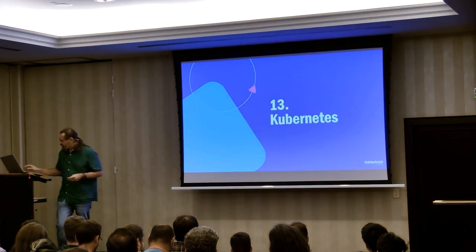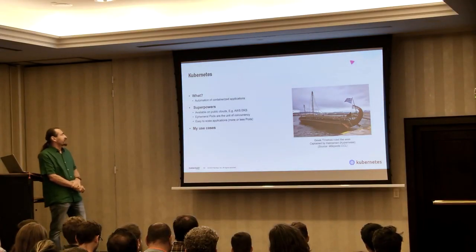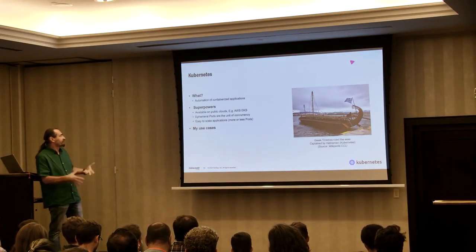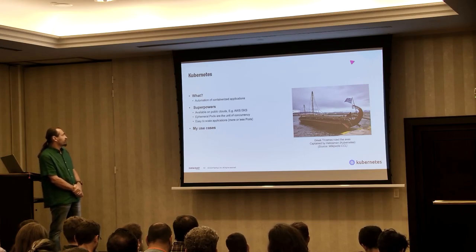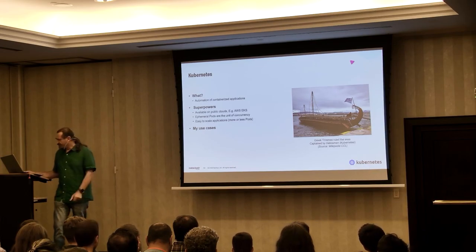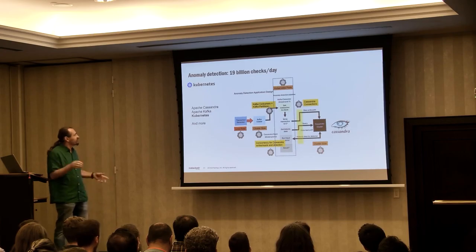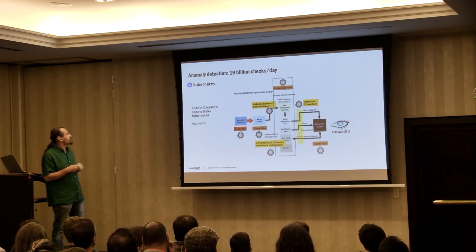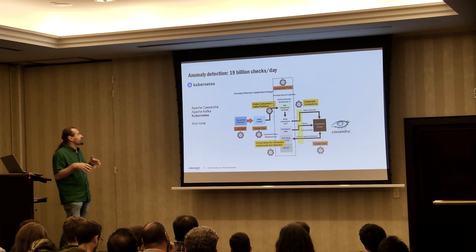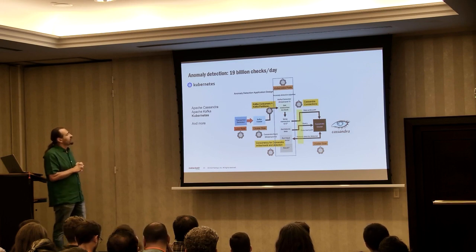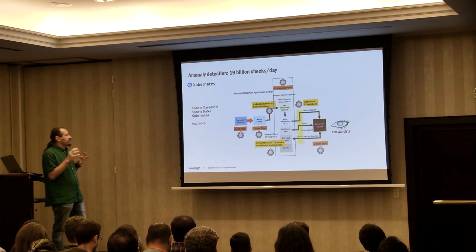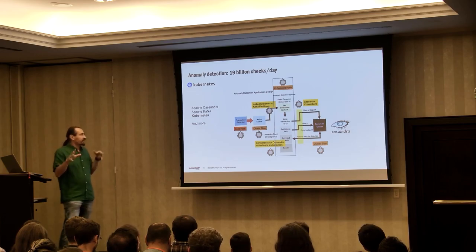Number thirteen: Kubernetes. It's a container application runtime environment available on public clouds. Ephemeral pods are the unit of concurrency and it's very easy to scale applications — maybe too easy, as I've discovered. I used my anomaly detection system's Kafka clients running on Kubernetes. The problem is you can scale up the clients really easily, but you also have to keep track of whether Kafka itself and Cassandra are scaled suitably.